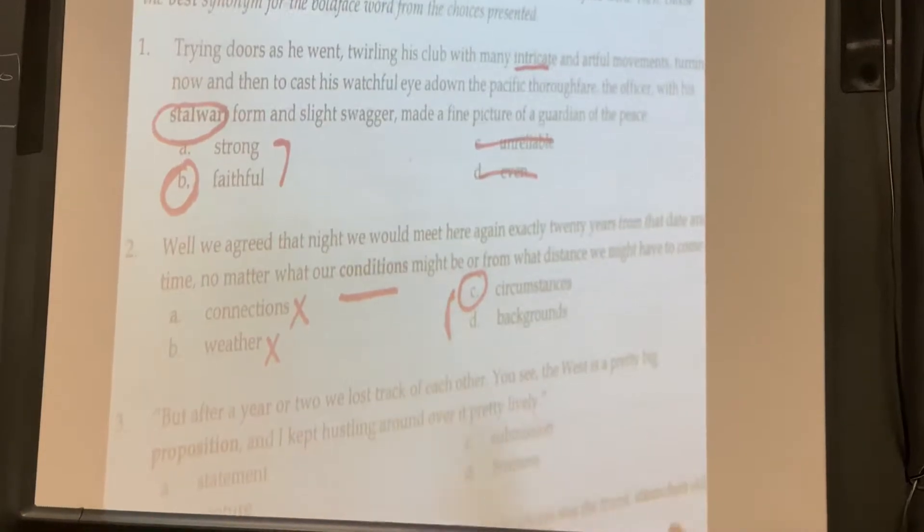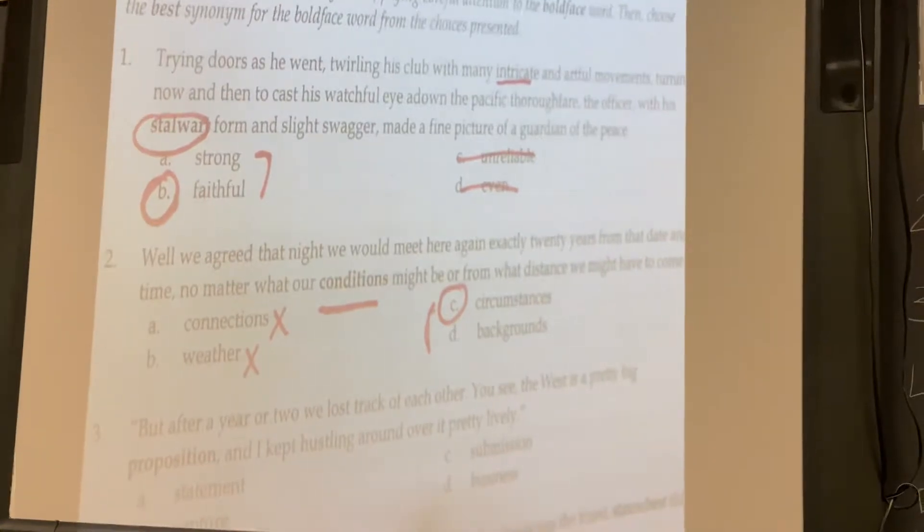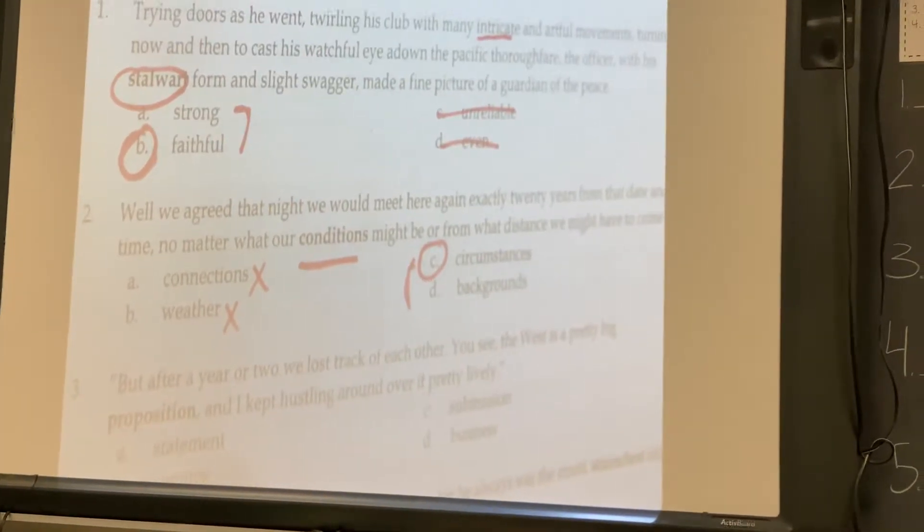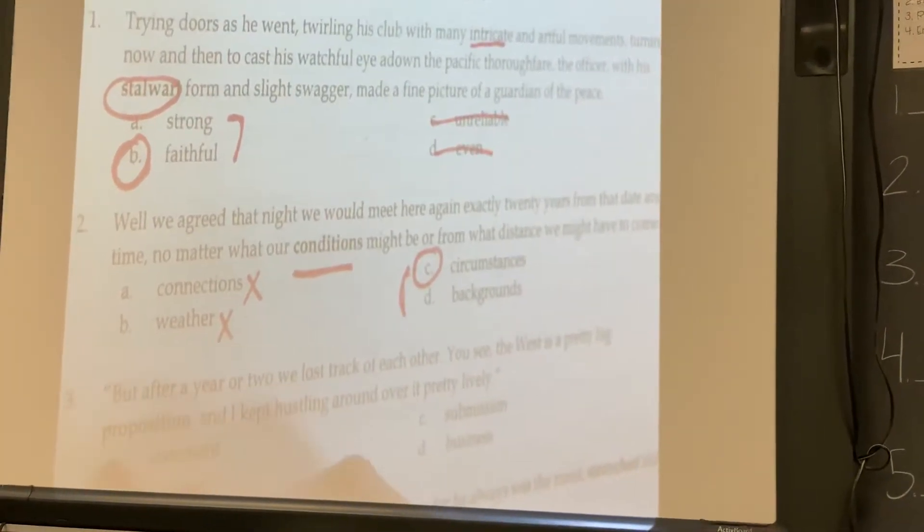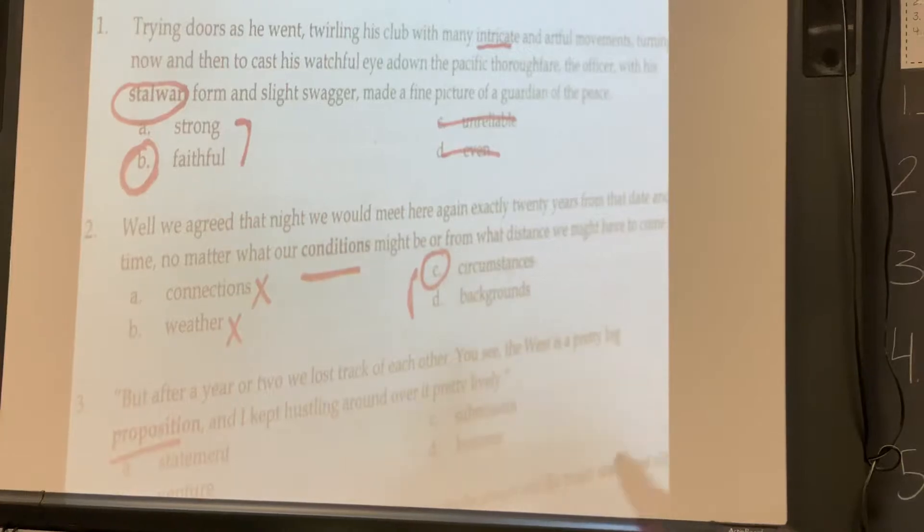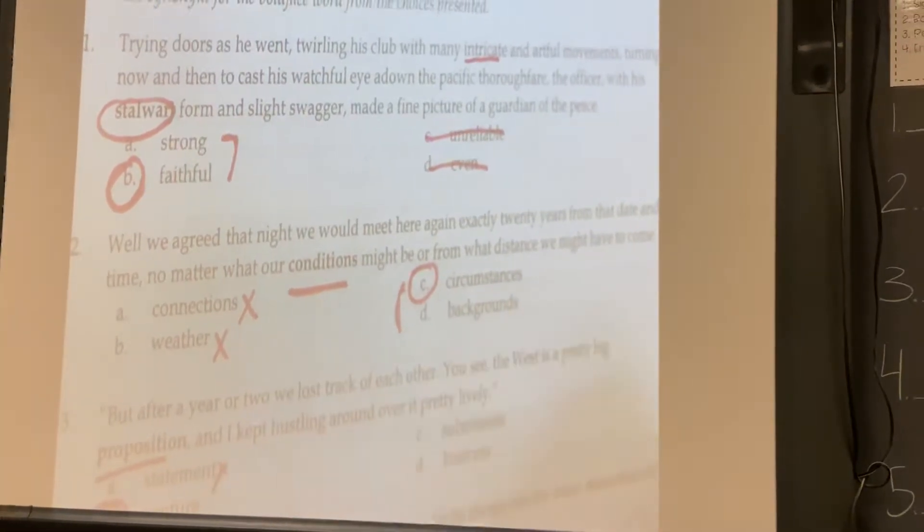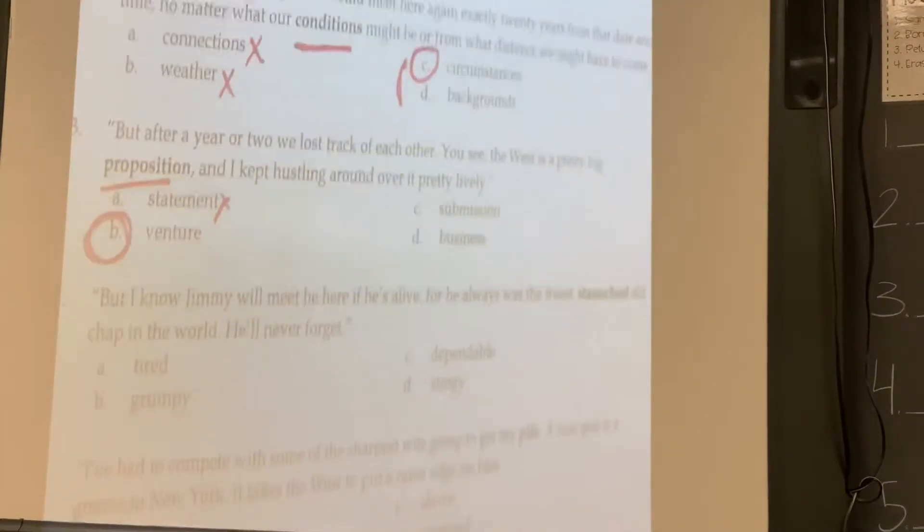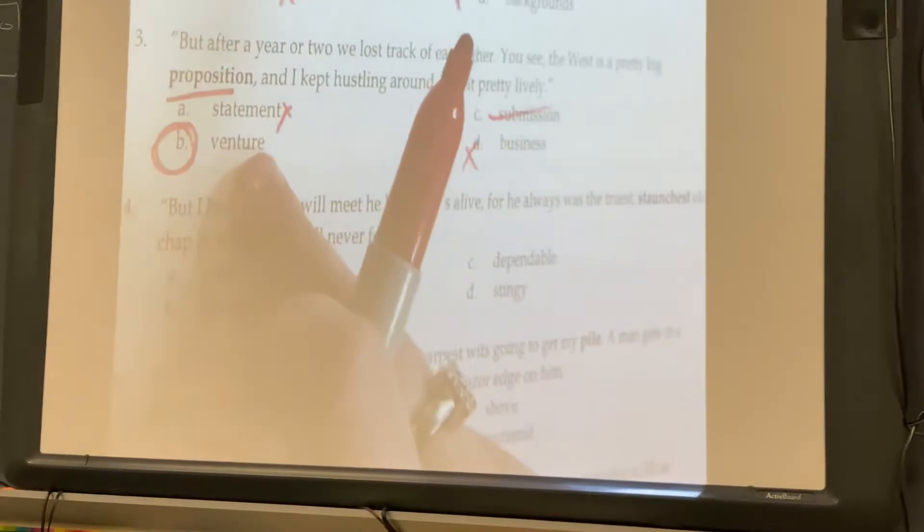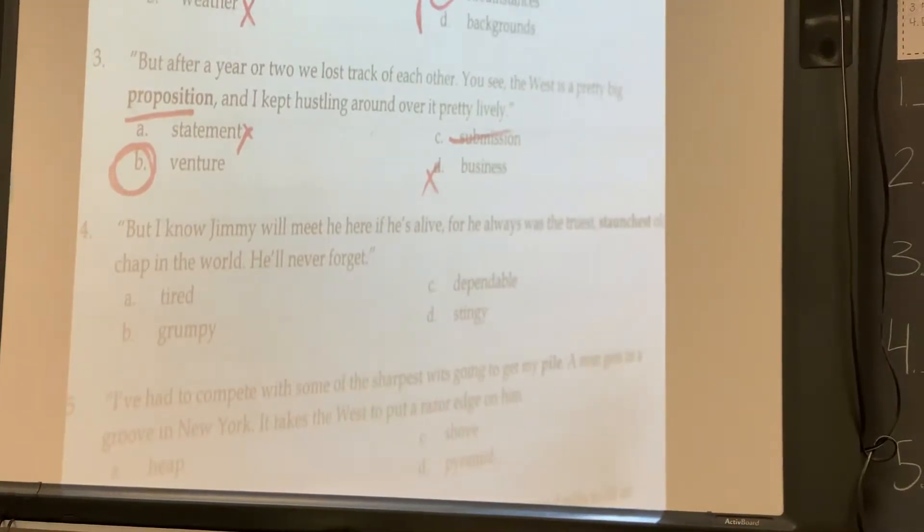Three: But after a year or two, we lost track of each other. You see, the West is a pretty big proposition. I kept hustling around over it pretty lively. So for this one, a proposition is really a proposal, a scheme, a plan, or a project. So the word that goes best with that is probably venture, not statement. I'm going to double check, kind of use the process of elimination, not really a business here, and not a submission. So I'm going to go with B, venture.